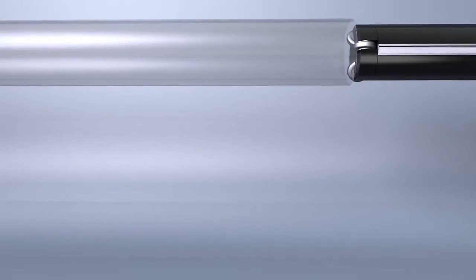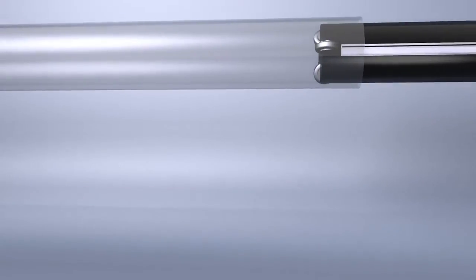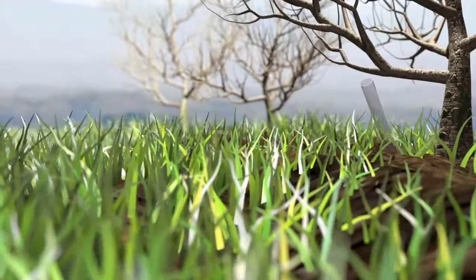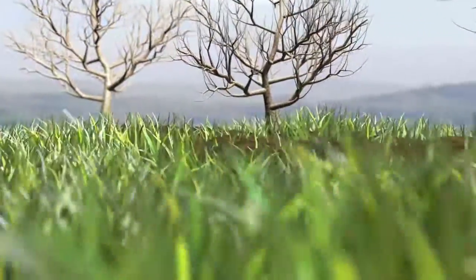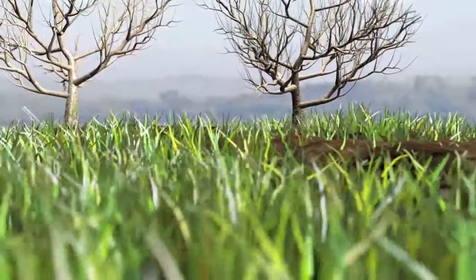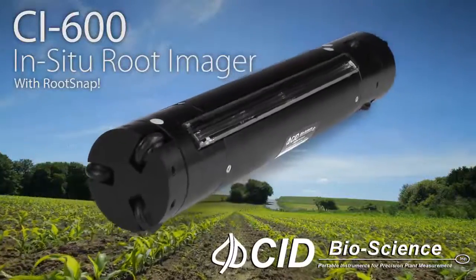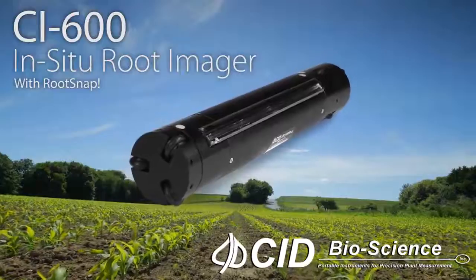In conclusion, the CI600 is the most efficient, non-destructive way of observing the rhizosphere in action. Most growers will only need one CI600 scanner with multiple root tubes to paint an entire image of their crop. Take the guesswork out of root management with the CI600 in-situ root imager with RootSnap.